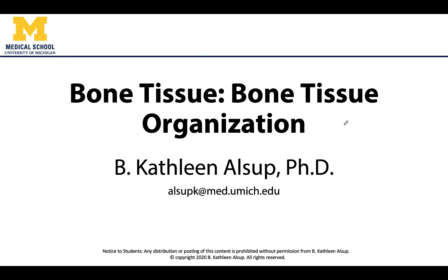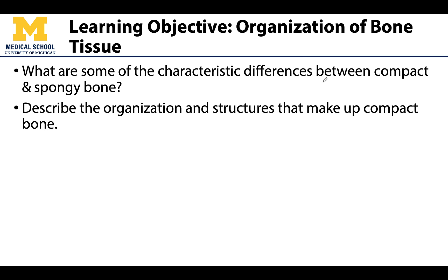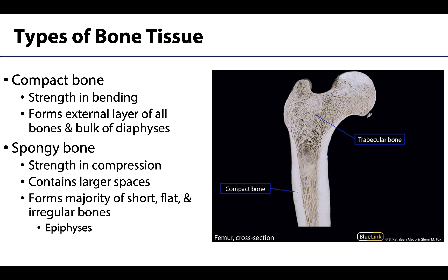Hello anatomy colleagues, this is Dr. Alsup and in this mini lecture we will be discussing how bone tissue is actually organized, forming two major organizational types referred to as compact and spongy bone. While they are made up of the same general components, they are organized differently and have very characteristic differences visible both microscopically and grossly. We will also describe the microscopic organization of the compact portion of a long bone.